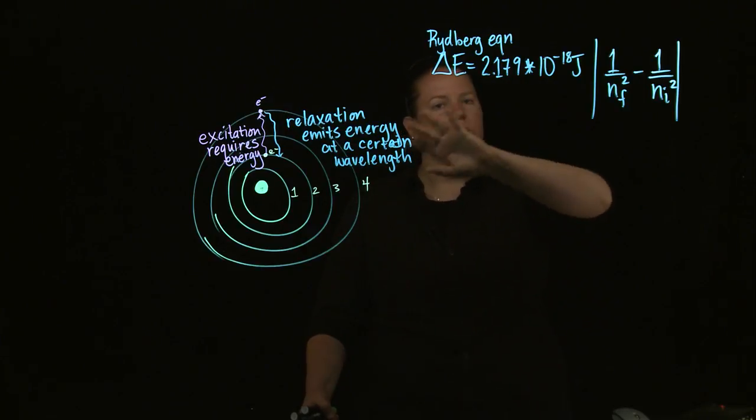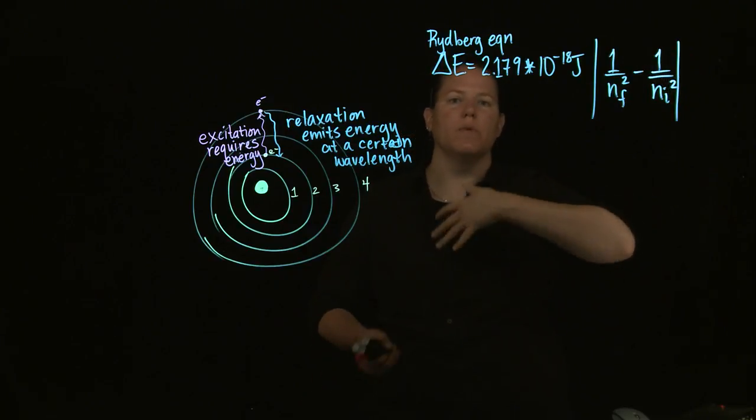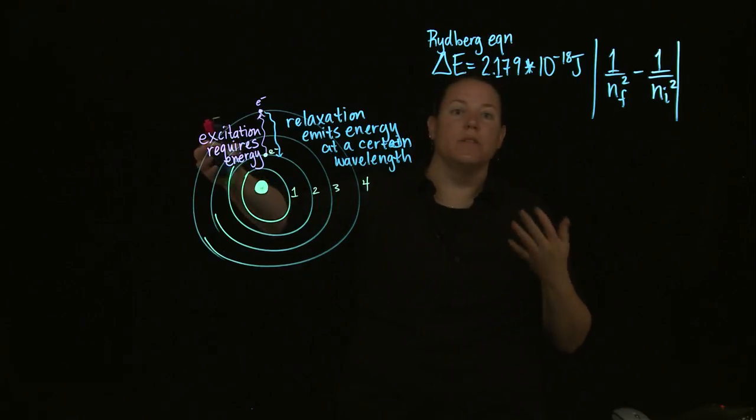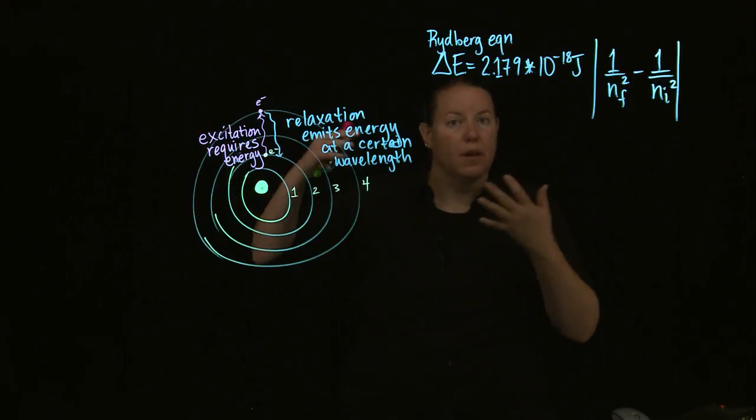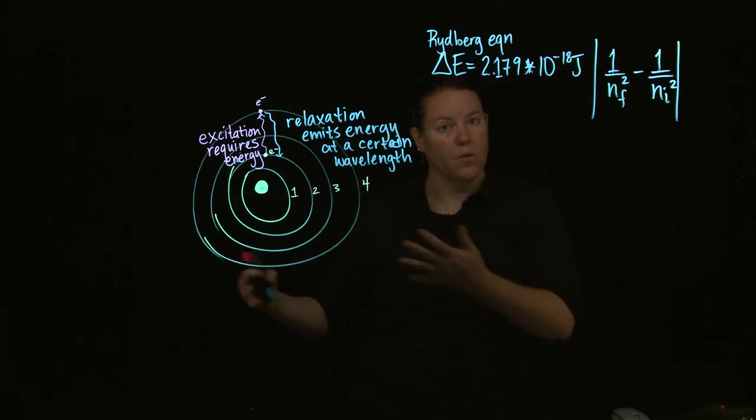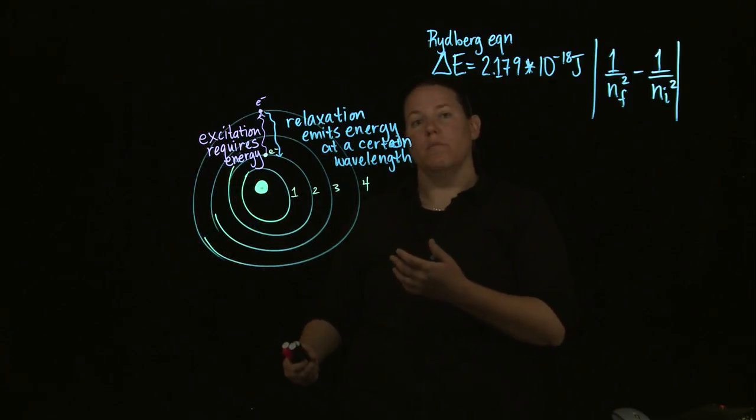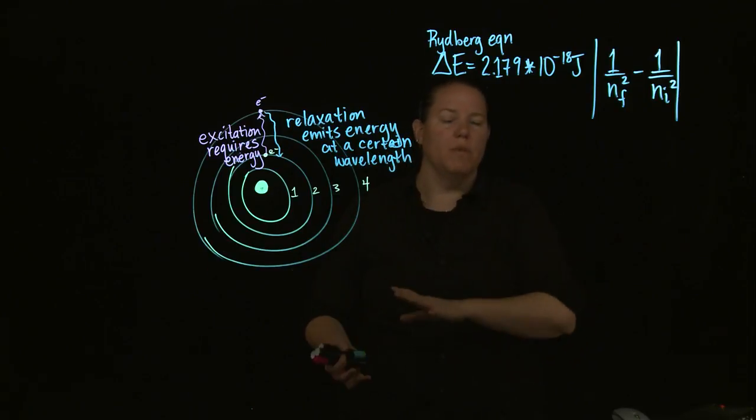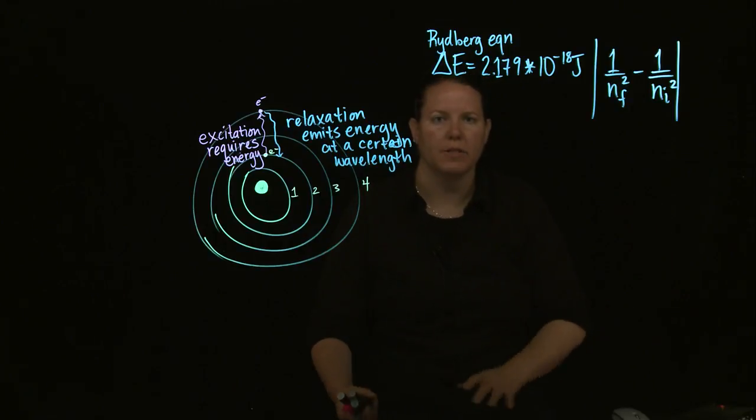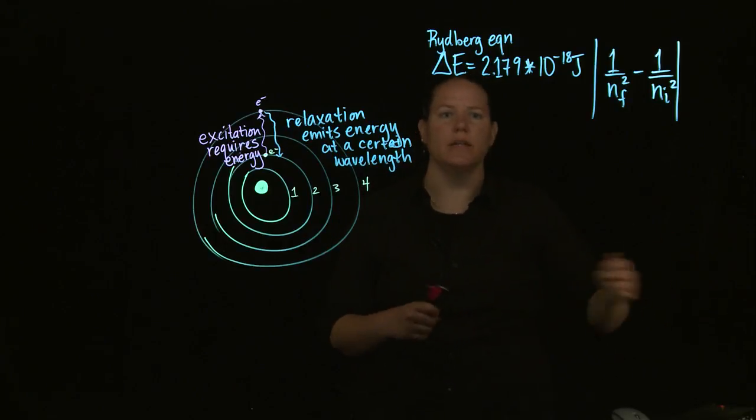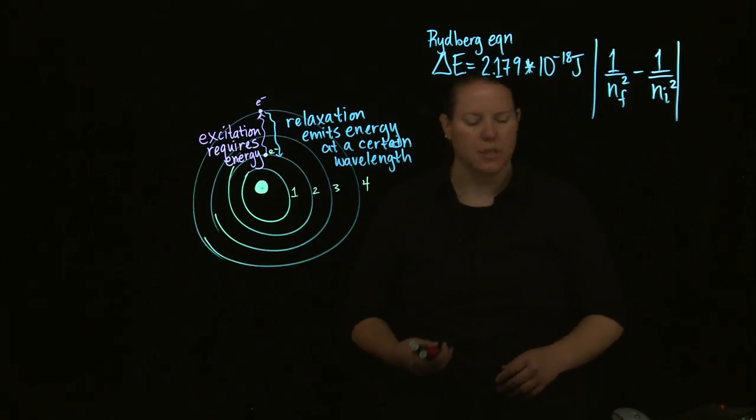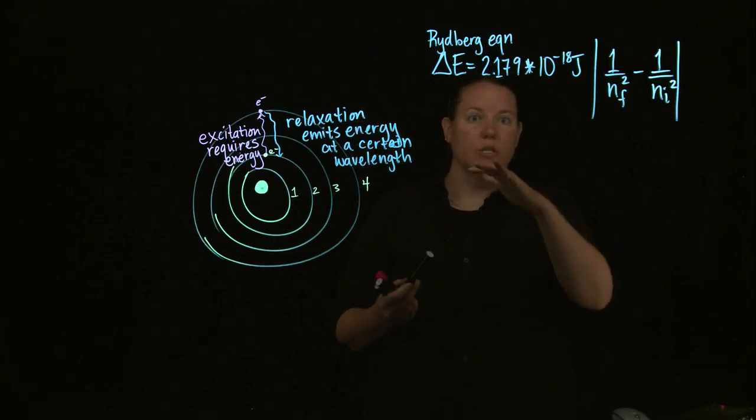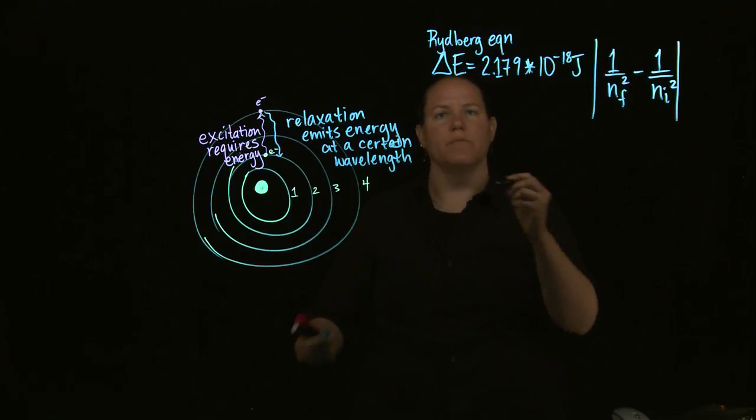Remember, energy is assigned sign conventions based off of whether it's being emitted or it's required. If we're finding the energy, we're just going to calculate the number, and then we're going to assign a sign convention based off of whether it requires energy, which would be a plus, that's like endothermic, or if it emits energy. If it emits energy, then it's a minus. So, releasing energy, releasing heat, all of those basically the same. In terms of this, we're going to assign sign conventions after the fact.